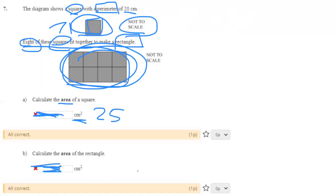All right. So, eight of these squares. One, two, three, four, five, six, seven, eight is one rectangle.